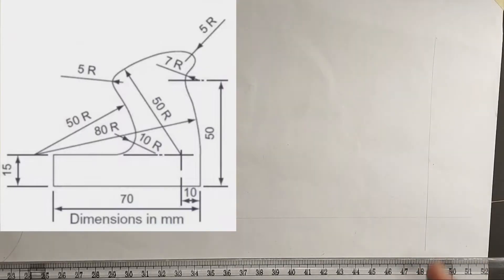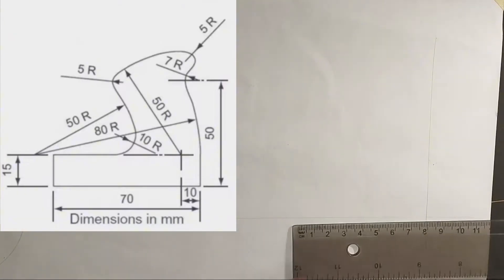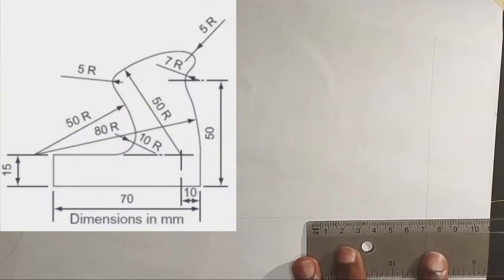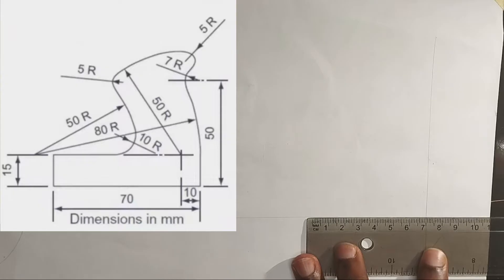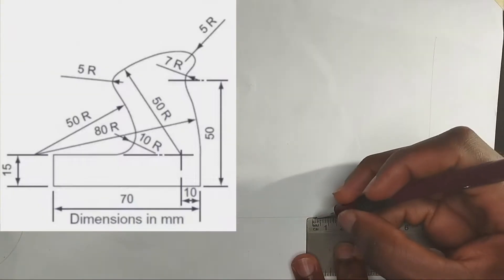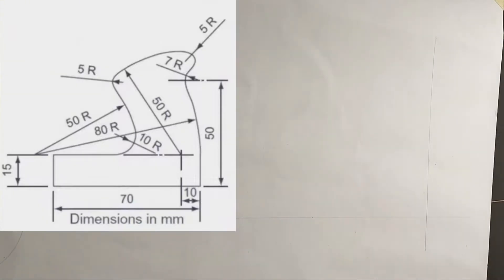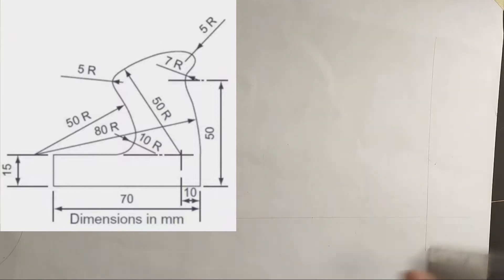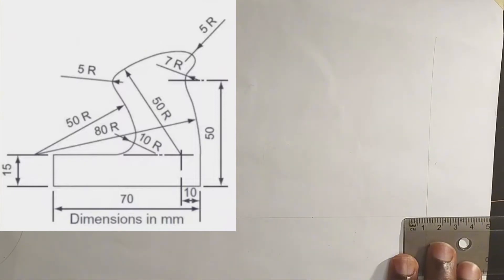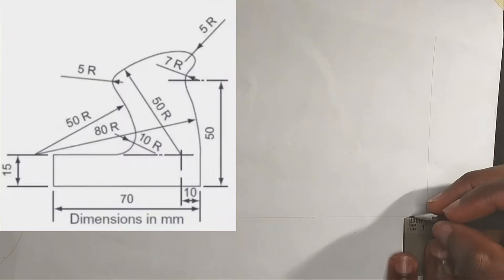We have been given this particular length, as seen on the diagram, to be 70mm. So picking my ruler, I'm going to pick 70mm like this. Then we are also given another length of 10mm here, so I'm going to pick 10mm like this also.